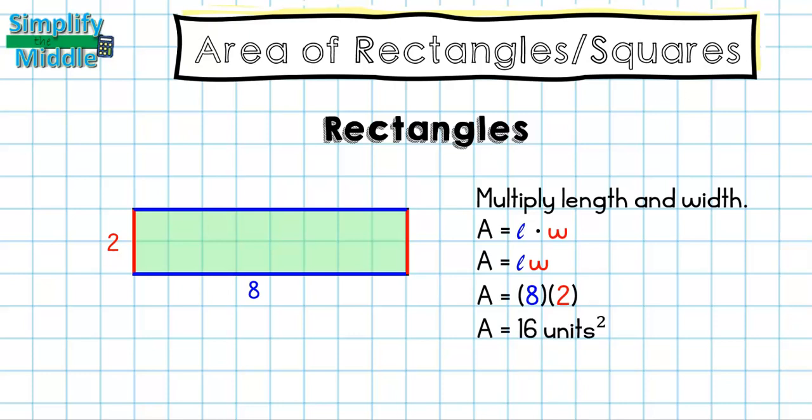So the area for this particular rectangle is going to be 16 units squared. And I could also find that by counting how many squares are in this shape because it is on grid paper, but this is the way that we are going to do them when we do not have them on grid paper, and the formula is going to be a shorter way to get my answer.